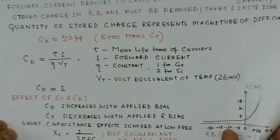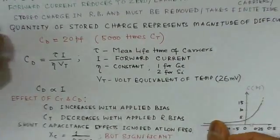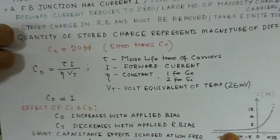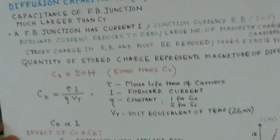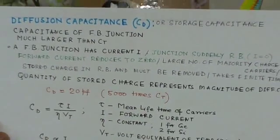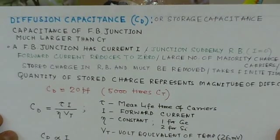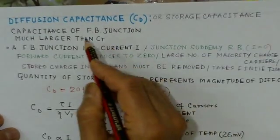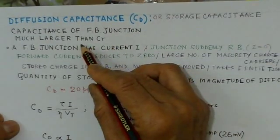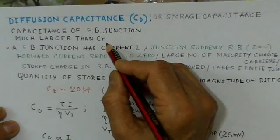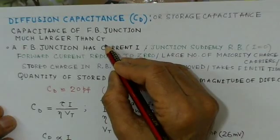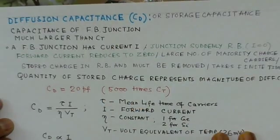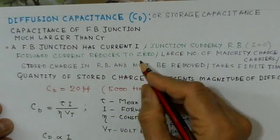Now the other important capacitance comes into play, that is, we call it diffusion capacitance. It is also called the storage capacitance, and this capacitance occurs when the junction is forward biased. And another thing to note is the value for this capacitance is very large as compared to the capacitance of the reverse biased junction.